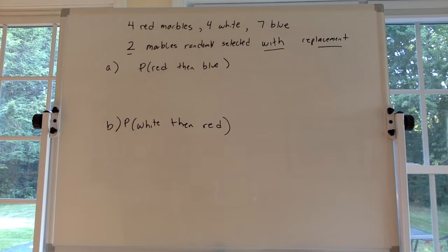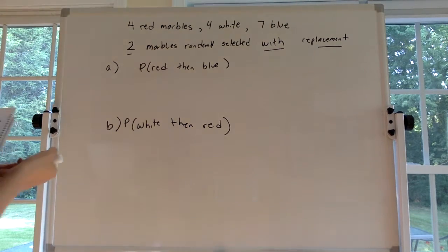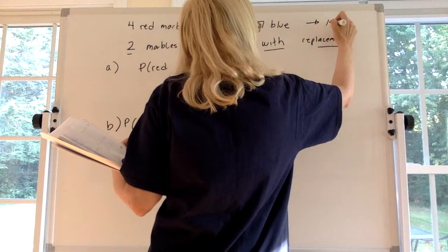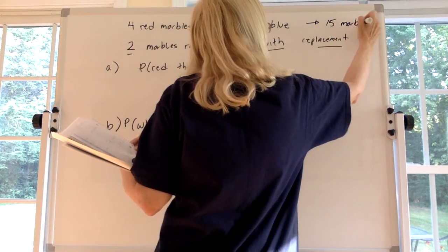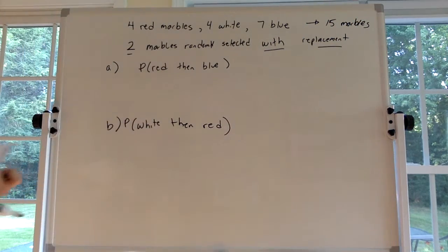Okay, in this problem we're talking marbles. So we have a bag of marbles and in that bag we have four red marbles, four white marbles, and seven blue marbles. Okay, so I think if we add those up we can agree that we have 15 marbles in the bag. Four plus four plus seven is 15.